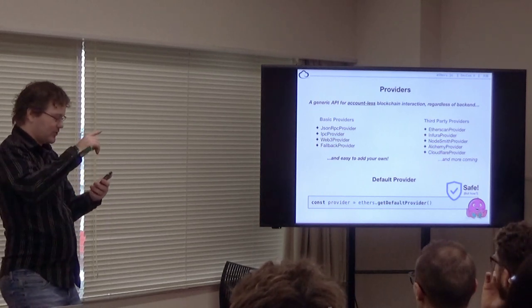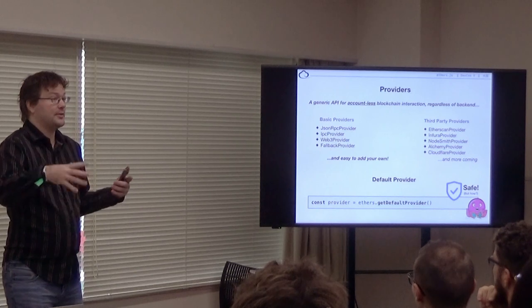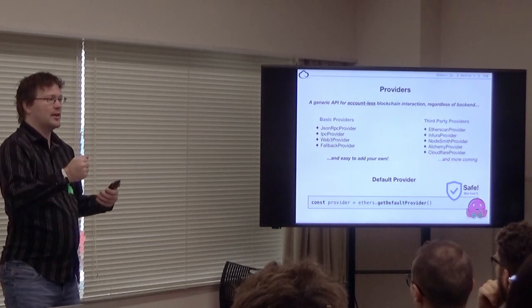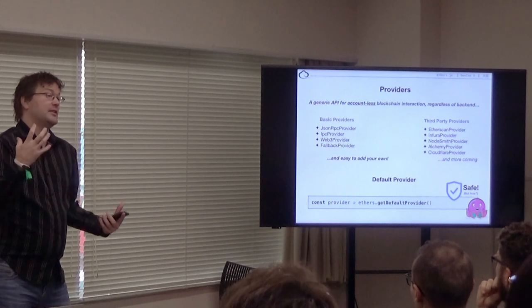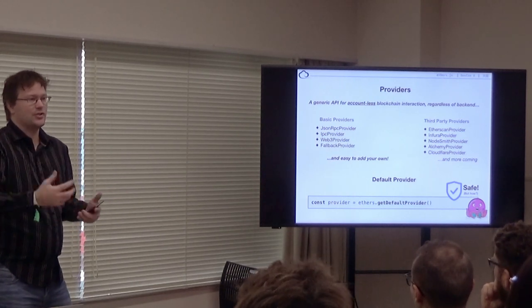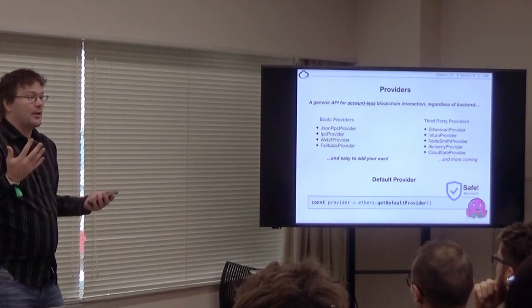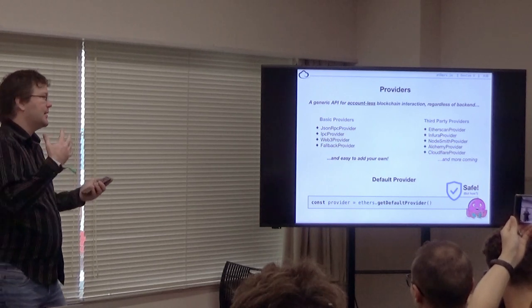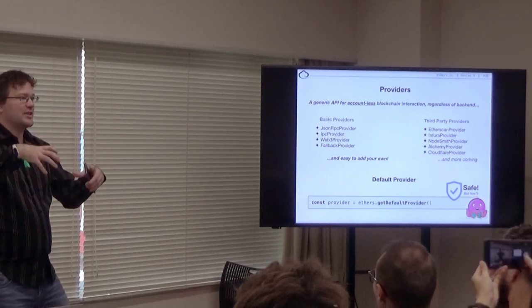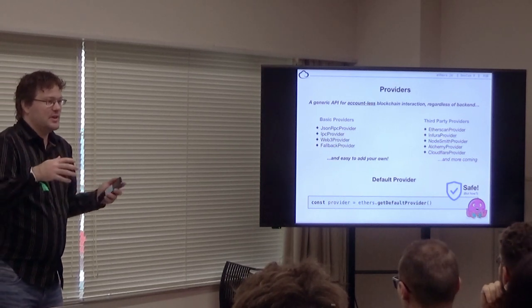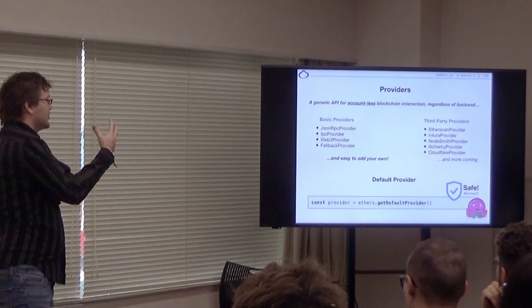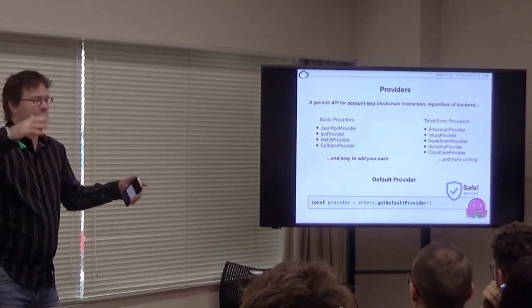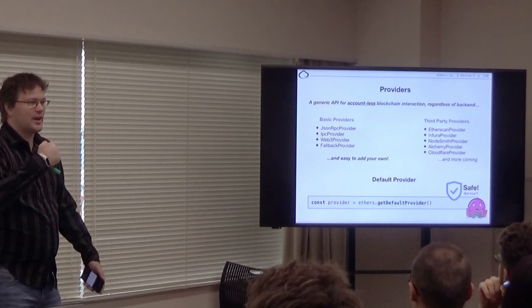So a big distinction between ethers and most other libraries as they are today, and there's a few people I'm working with trying to help promote this idea, that signers and providers should be fundamentally different creatures. Your signer has a private key in it. It actually signs messages for you. Providers provide accountless information. They let you ask for things like, what is the current block number? What does block 75 look like? The gas price. They let you send a raw transaction, but a raw transaction in and of itself is kind of accountless. So there's a big distinction between providers and signers. If you're coming from Web3 worlds, this will be one of the big pain points.